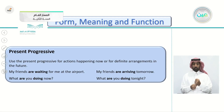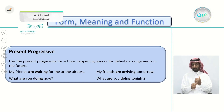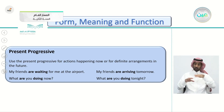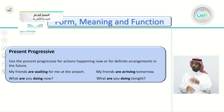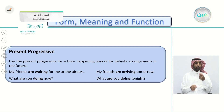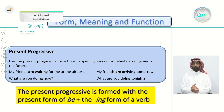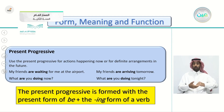We continue with the present progressive. We use the present progressive for actions happening now or for definite arrangements in the future. For example, 'My friends are waiting for me at the airport' — happening now. 'My friends are arriving tomorrow' — this is a definite arrangement. Questions: 'What are you doing now?' 'What are you doing tonight?' The present progressive is formed with the present form of 'be' (am/is/are) plus the verb with -ing.